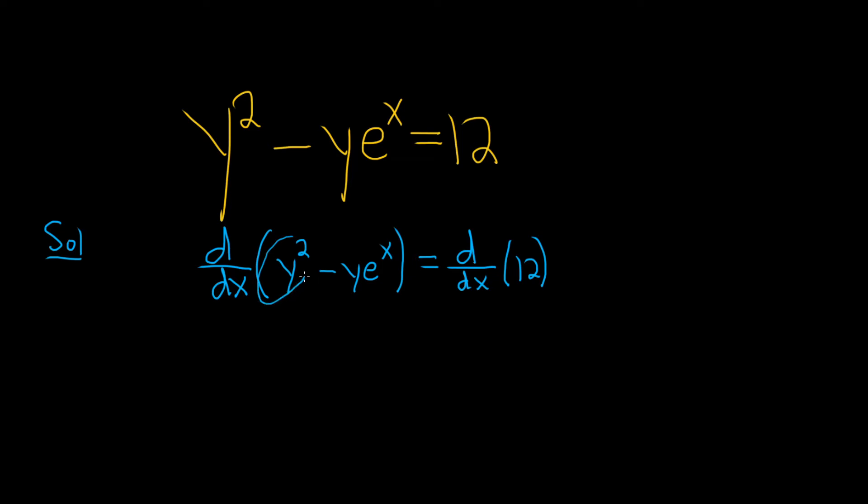So let's take this derivative here first. So y squared. So you have a function of x, which is y, to a power. So we bring down the 2. We subtract 1, so we just get 2y. And then we have to use the chain rule. So times the derivative of the inside. You might say, well, what's the inside? The inside function is just y. And its derivative is called dy/dx.